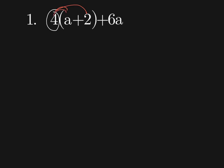So we have 4 times a, now remember that's a 1 there, so 4 times 1 is 4, so this is 4a. And then we have 4 times 2, which is 8. Now the 6a is not in there, it's still part of the problem, so I'm going to bring it down.